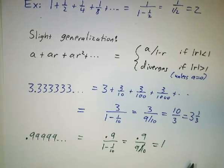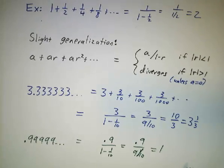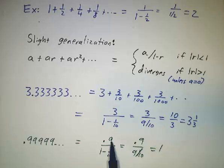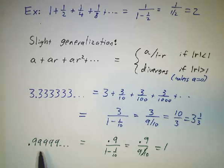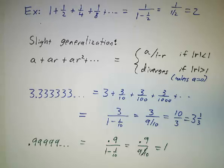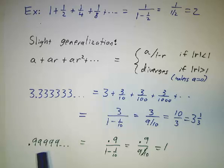And 0.9999 repeating: the first term is 0.9 and the ratio is 1/10, so that's 0.9 divided by 9/10, and that's 1. So 0.9999 repeating means the limit of 0.9, 0.99, 0.999, 0.9999, and so on — and that limit is 1.